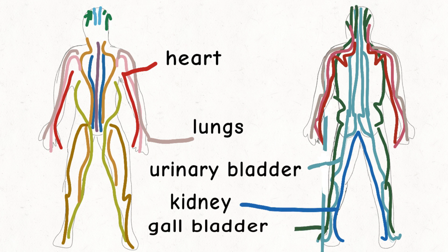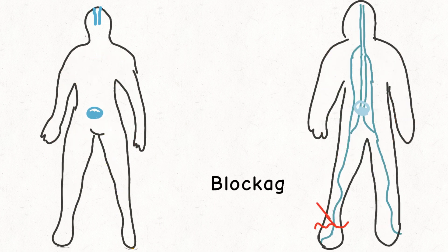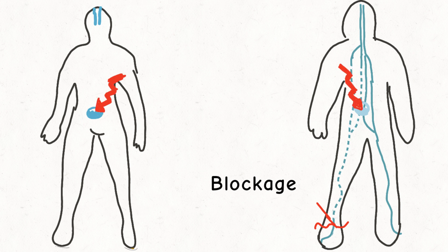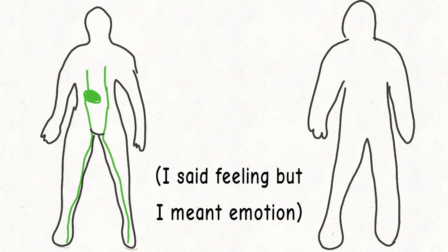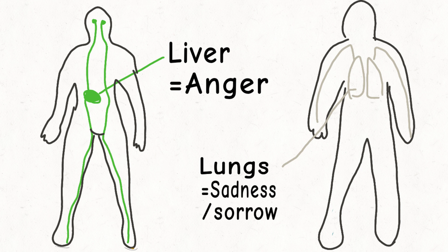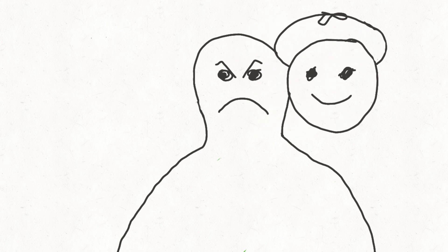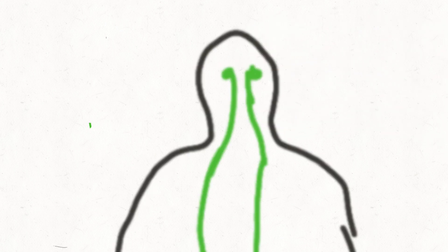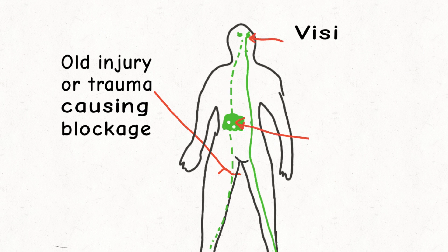Each energy pathway has to do with a certain organ. And if there's an imbalance or blockage in an energy pathway, you will get issues with that organ. The interesting thing is that each organ also has to do with a certain feeling. So if you look at the liver meridian, it's got to do with anger. The lungs have to do with sadness. If there's a blockage in your flow of anger, if you don't express your anger, there will also be a blockage on the liver meridian. And there will be issues that has to do with how the liver functions.